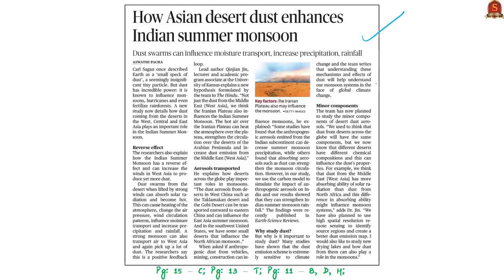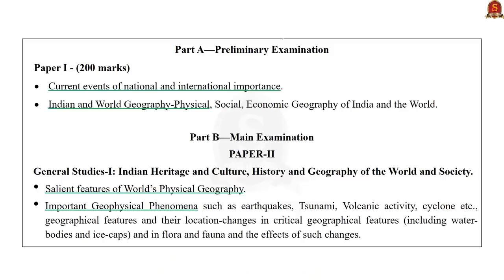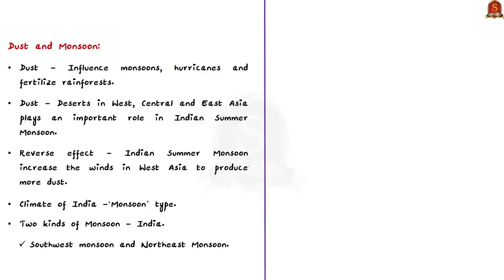This news article is about the significance of dust and its role in impacting atmospheric circulations, primarily its impact on the Indian summer monsoon. The syllabus relevant to this article is highlighted here. We commonly view dust as a useless speck, but this so-called useless speck has incredible power — it has the potential to influence monsoons, hurricanes, and even fertilize rainforests.